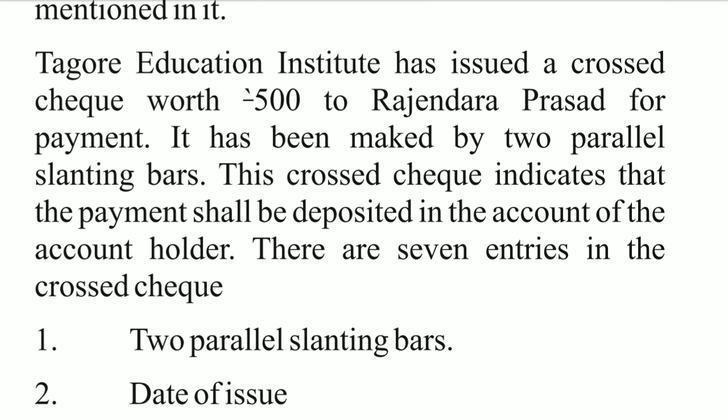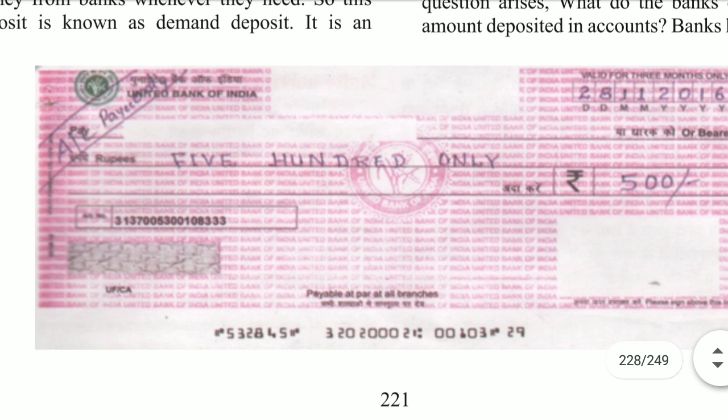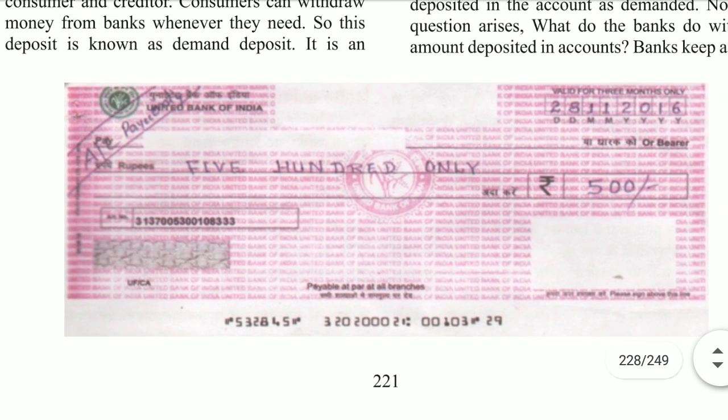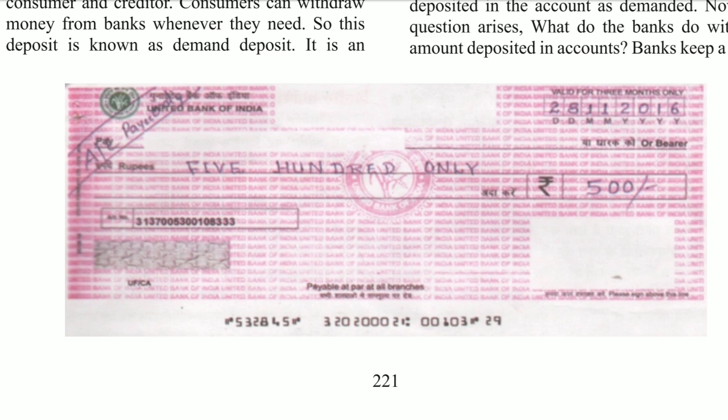For example, Tagore Education Institute issued a cheque worth $500 to Rajendra Prasad for payment. A crossed cheque has two parallel slanting bars drawn in the corner. This crossing indicates that the payment shall be deposited directly into the account of the account holder. When we make a crossed cheque, we draw two parallel lines in the upper left corner.